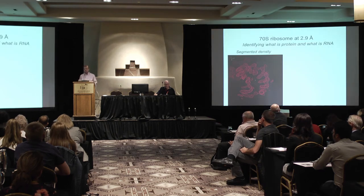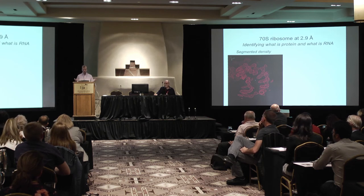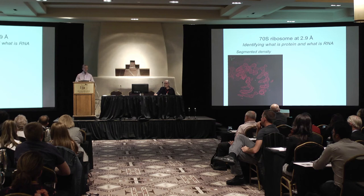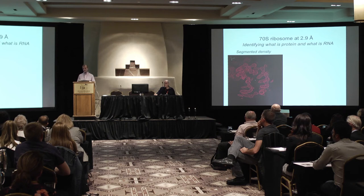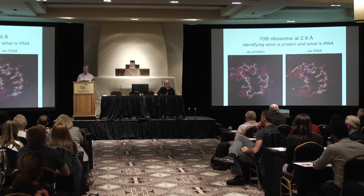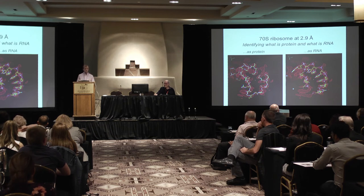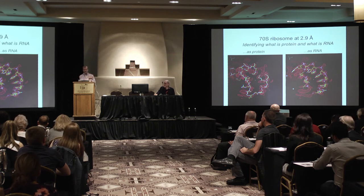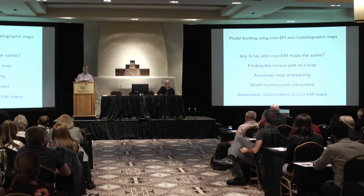Another challenge is building a structure like a ribosome that has both RNA and protein. Anybody who's worked with RNA and protein can identify which is which by looking at the map, but doing it automatically is trickier. We use the easy approach: build it as protein — it traces something but doesn't fit very well. Then build it as RNA — it fits very nicely and looks like RNA. We can build everything as protein, everything as RNA, and wherever it fits best, that's what we call it.